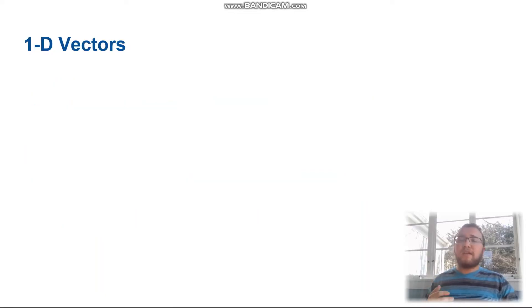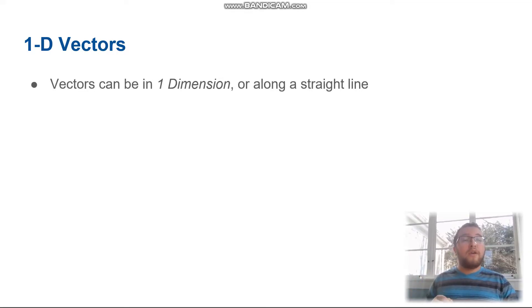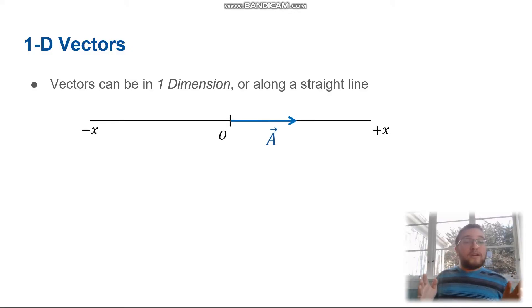Since they have direction, we need to talk about the dimensions of them. We're going to start off with one-dimensional or 1D vectors. So these are vectors that are along a straight line. They are only in one dimension. So we have this vector a here, and again, it's graphically represented with an arrow, and it's pointing in the positive x direction. So, there's only two directions this vector a can go. It can go in the positive x, or the negative x.